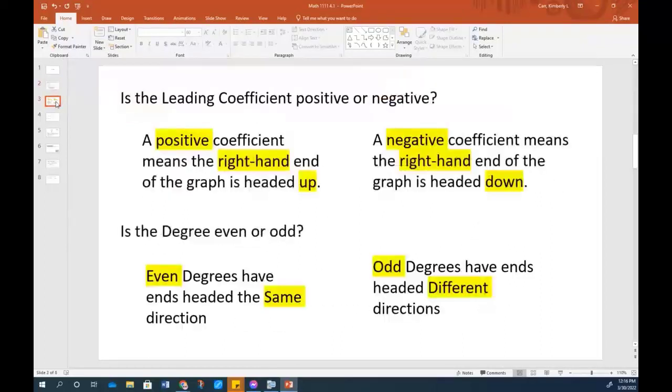How does that work for us? Well, this is really the summary information. So you might want to take a screenshot or snapshot of this page. But if the leading coefficient is positive, the right-hand part of the graph is headed up. If the leading coefficient is negative, then I know that right-hand end of it is headed down. And what even and odd tells me is whether or not the ends are headed the same direction. If it's even, they are headed the same direction. And if it's odd, they're headed different directions.